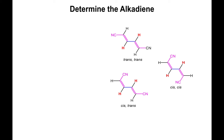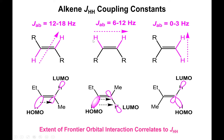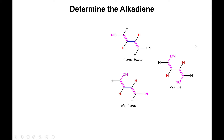So to keep an eye on these values: roughly 12 to 18 Hz is trans, 6 to 12 Hz is cis, and 0 to 3 Hz is your geminal configuration. We have three isomeric molecules right here — pretty much the same in terms of connectivity, with nitrile groups on the ends and alkenes in the middle. But the difference is that one molecule is trans-trans, one is cis-cis, and then the other is cis-trans. So we have three possible isomers for this diene molecule.